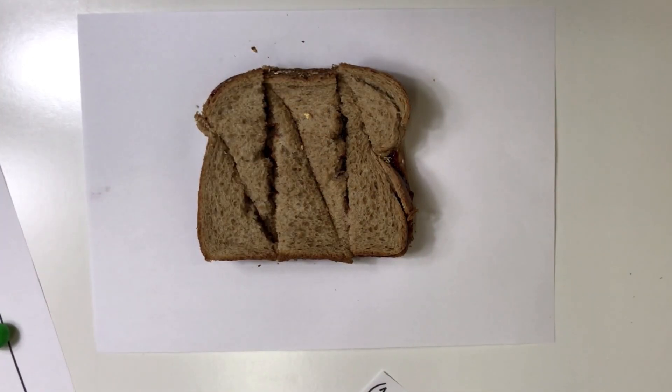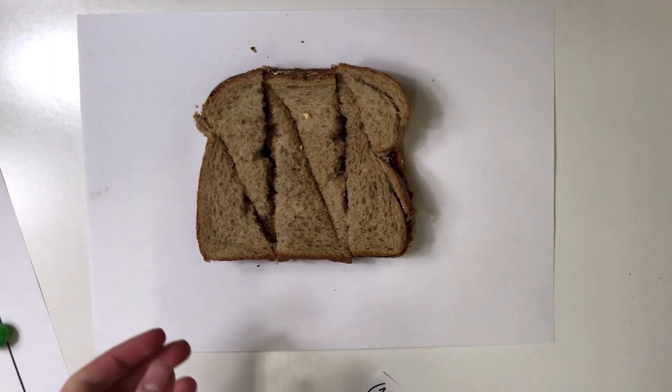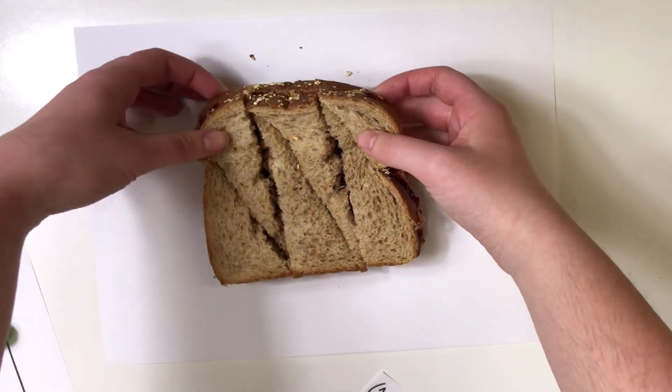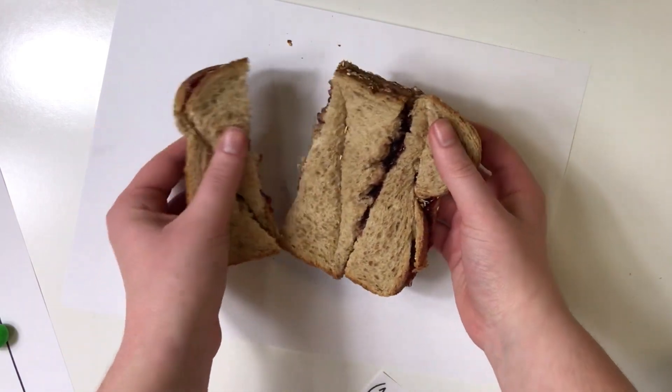So, it is impossible to cut a square into an odd number of equal area triangles. So, unfortunately, one of your friends is going to be very hungry.